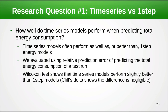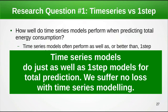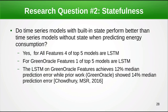Back to our research questions. For time series versus one-step models: the time series models performed as well as or better than the one-step models. The total difference was negligible according to Cliff's Delta, but it was statistically significantly better. Looking at the results, the one-steps highlighted in yellow don't do as well for the full feature set, whereas for the green oracle feature set — which was a one-step model to begin with — the one-step does quite well. Essentially, time series models do just as well as one-step models for total prediction, and we suffer no loss in accuracy or error when modeling with time series.